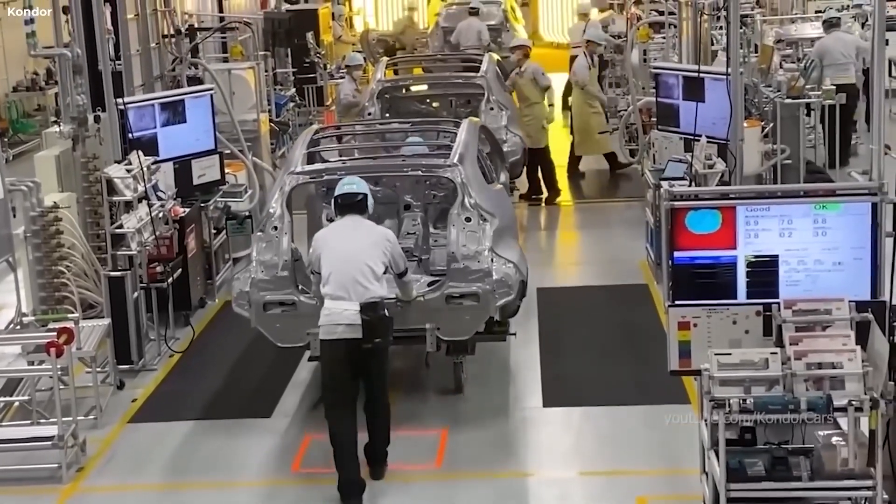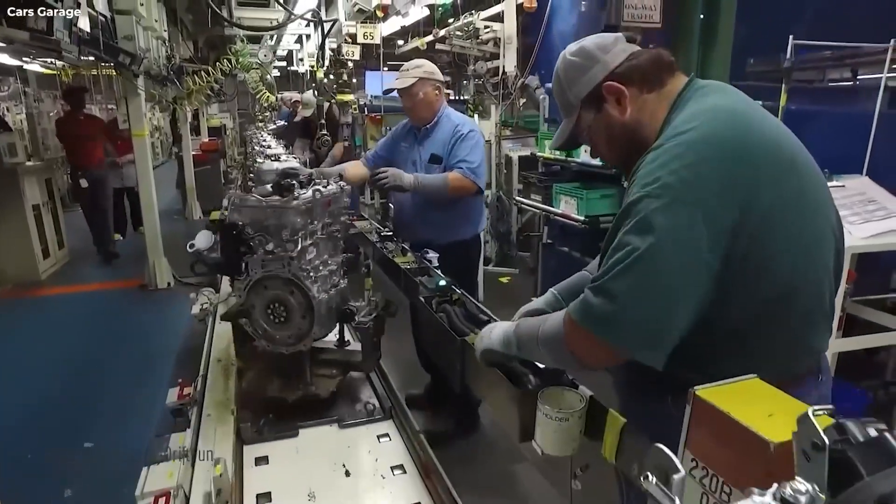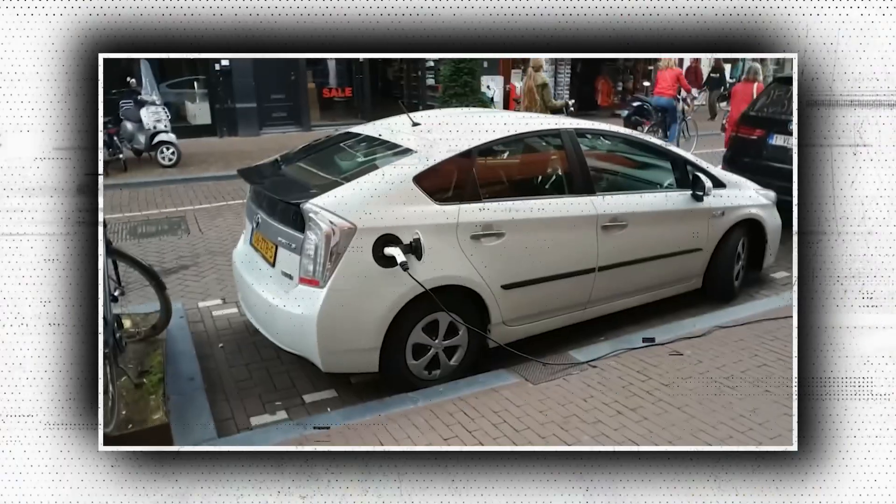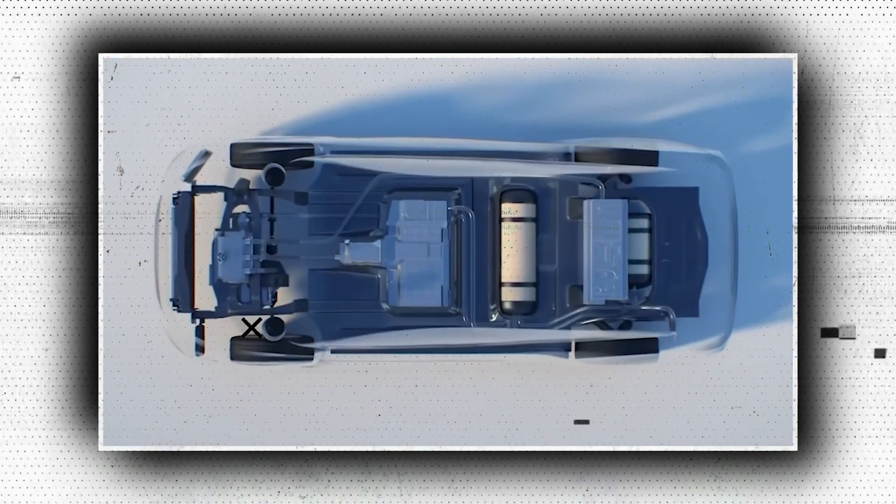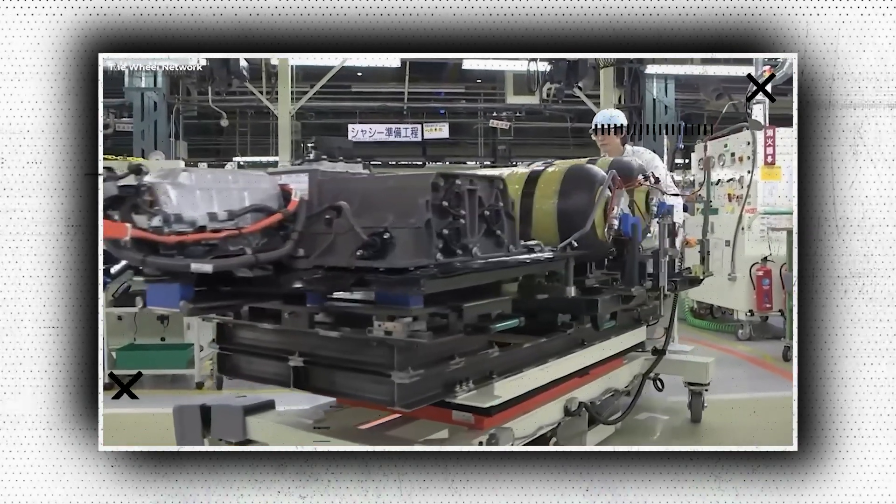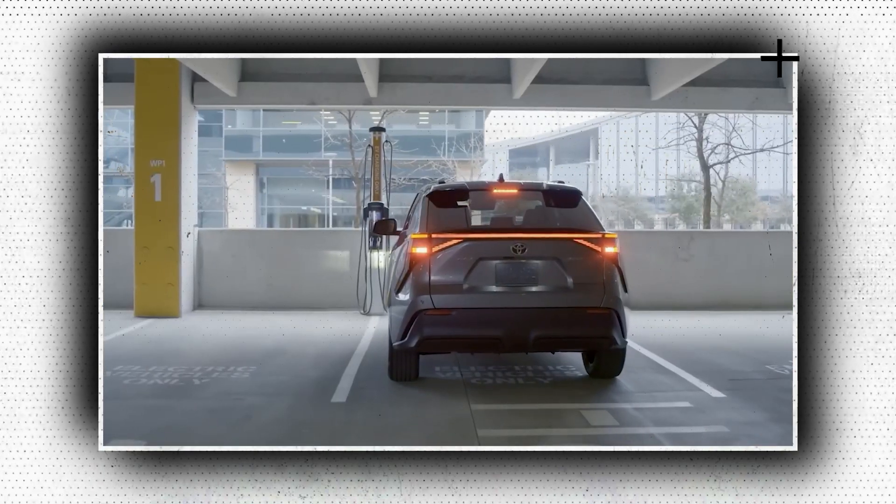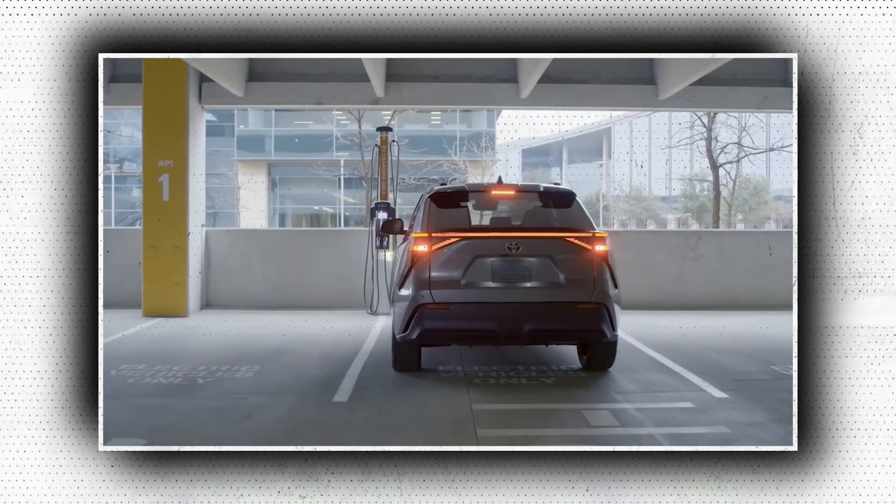Stacking all of these percentages on top of one another makes it difficult to measure their effects, and the corporation only offers instances of improvements rather than concrete figures. It nevertheless shows that Toyota is well aware of how swiftly it must increase its EV reach. Toyota will have to redesign and expand its manufacturing facilities in order to accomplish this, particularly with regard to the chassis and battery.